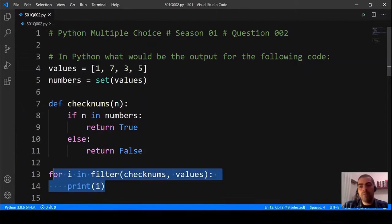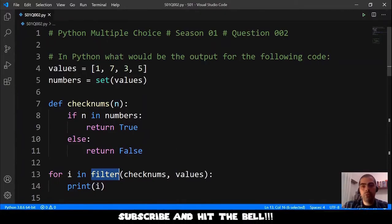Finally we have this for loop. For i in filter and for the filter function we provide two parameters. The first parameter is the check numbers function as a condition and the second parameter is the values as the collection to be filtered. So what would be the output of this?